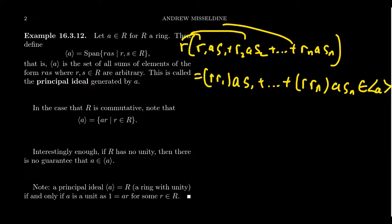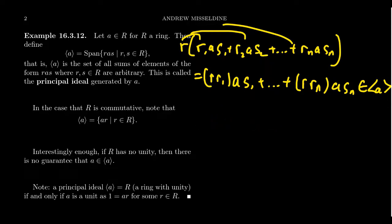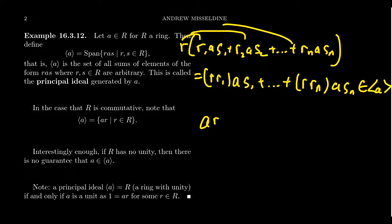If R is a commutative ring, the definition of a principal ideal simplifies dramatically: ⟨a⟩ is just the set of elements of the form a·r for r ∈ R. This works because commutativity lets us write r·a·s = a·(r·s), moving the front factor to the back. Closure under sums follows from the distributive property: a·r + a·s = a·(r+s), where r+s is again in R.